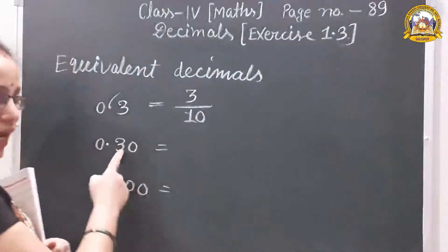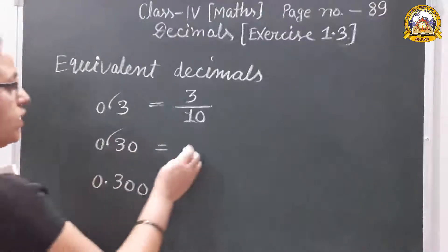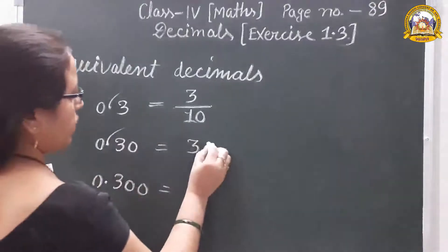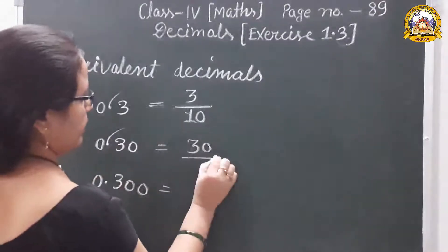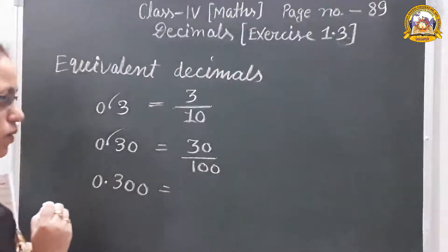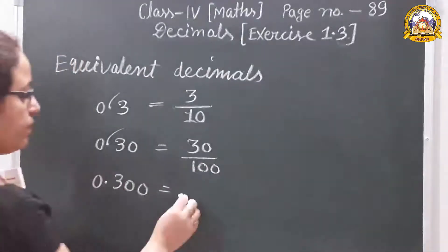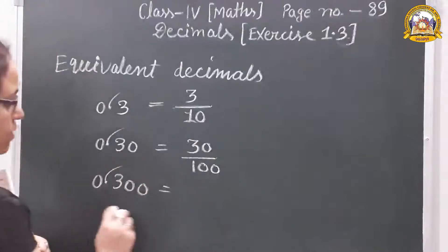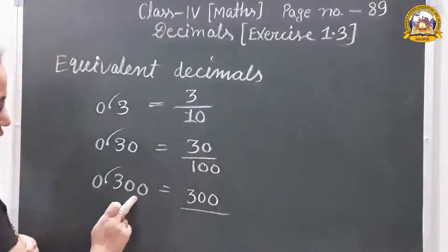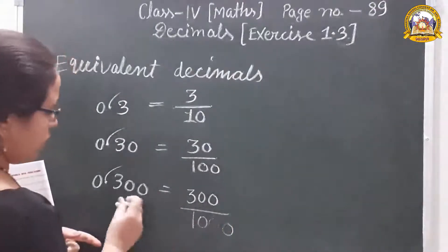In the second case, we remove the decimal from 0.30. How many zeros? Two zeros. In the third case, we remove the decimal from 0.300. What is the numerator? 300. And how many zeros in the denominator? Three zeros, because after the decimal there are three digits.